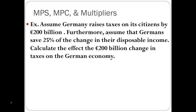Let's move on to our next problem. We're going to assume Germany raises taxes on its citizens by $200 billion, and we'll further assume that Germans save 25% of the change in disposable income. We'll calculate the effect of that $200 billion tax change on the German economy. Germans save 25% of their disposable income, so MPS is 0.25 and MPC is 0.75 — and 0.25 plus 0.75 equals 1.